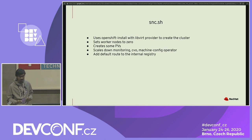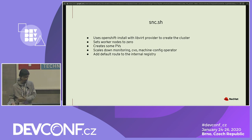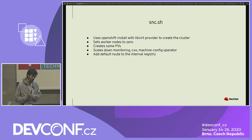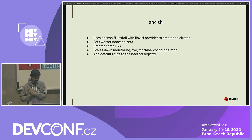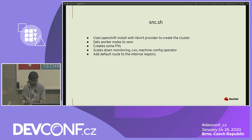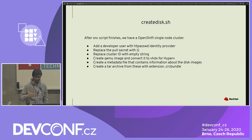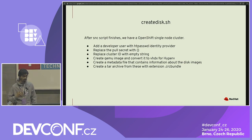The SNC.sh shell script uses OpenShift install with the LibVirt provider to create the cluster, then sets the worker node count to zero in the install config so it doesn't create worker nodes. We also create some persistent volumes so you can later create PVCs to use them in your code. We expose the internal registry so you can directly push images to it and use those images to deploy your app in the cluster. After SNC.sh runs, we have a VM which is a single-node OpenShift cluster, and then we do additional things to make the developer workflow easier.